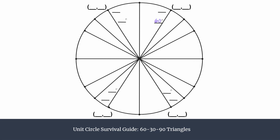We're working with our 60-degree angle here. We know that this one must be 120, this one must be 240 in the third quadrant, and then we have 300 in the fourth quadrant. In radians, these are pi over three, two pi over three, four pi over three, and five pi over three. If you're unsure how to label these, go check those videos out.